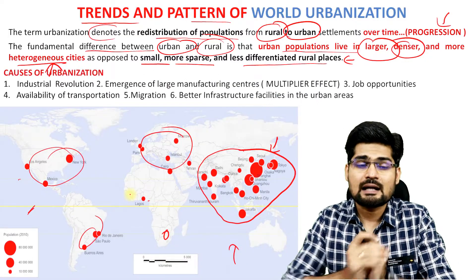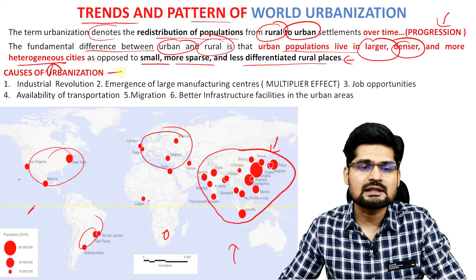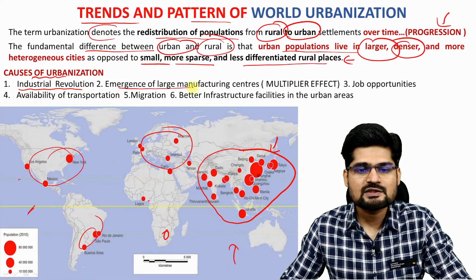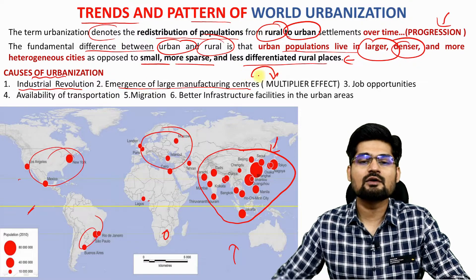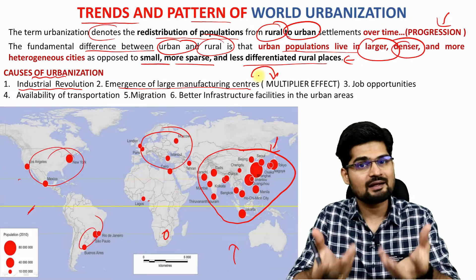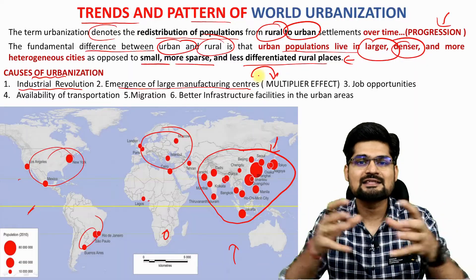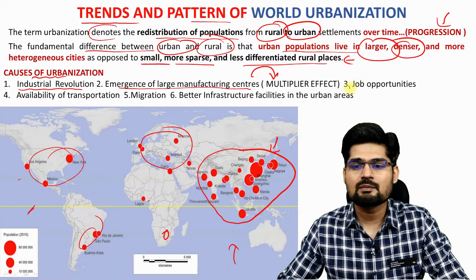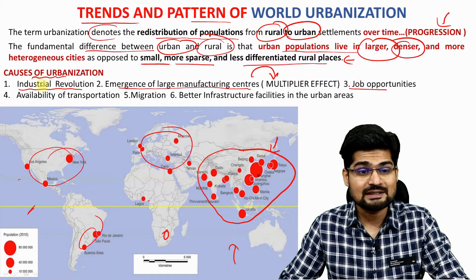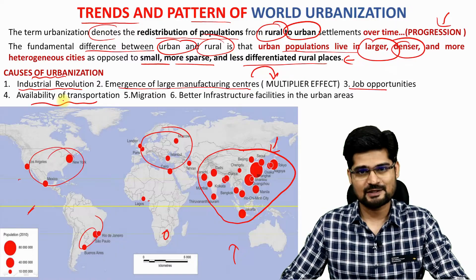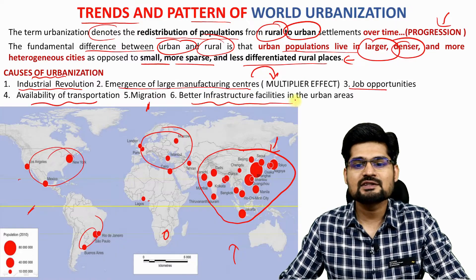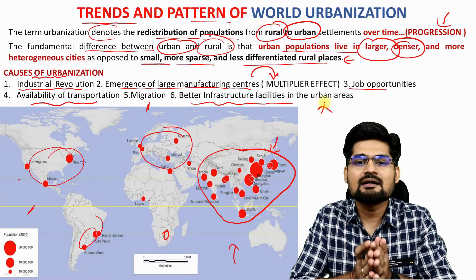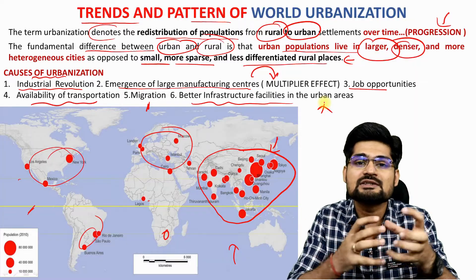Let's look at the causes of urbanization: the industrial revolution, emergence of large manufacturing centers. We talked about growth pole theory, the multiplier effect — one big industry leading to several ancillary industries — and the proliferation of new technologies and development. Then you have job creation and job opportunities in those centers, availability of transportation, migration, and better infrastructure facilities in urban areas. These are the major factors driving world urbanization trends and patterns.